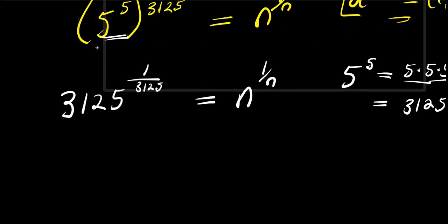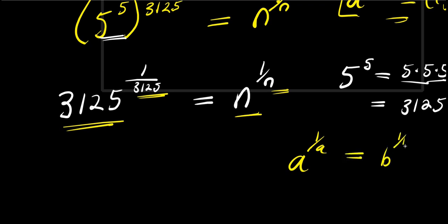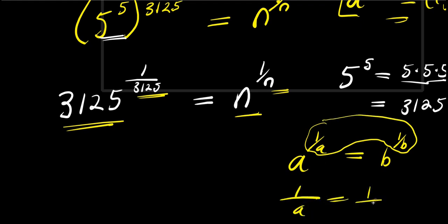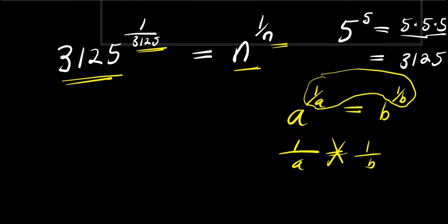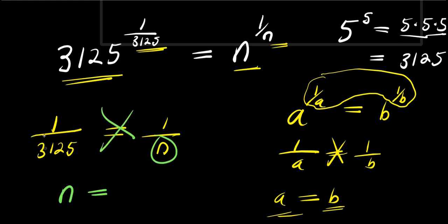From here, the base on the left and the exponent on the left are the same number, and similarly the base and exponent on the right match. Using the rule: if a^(1/a) = b^(1/b), then 1/a = 1/b, and cross-multiplying gives a = b. So we have 1 over 3125 equals 1 over n, and therefore n equals 3125.